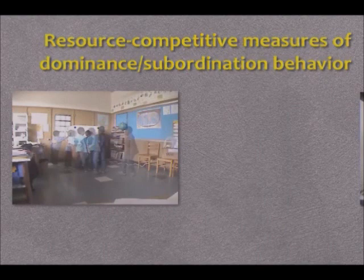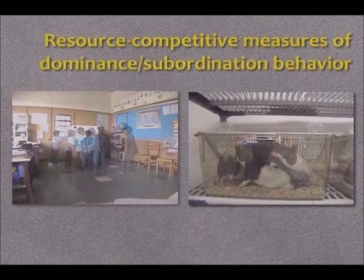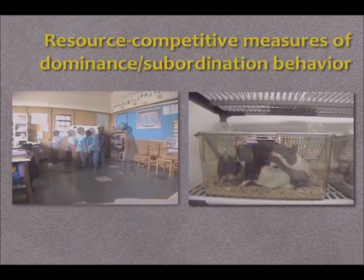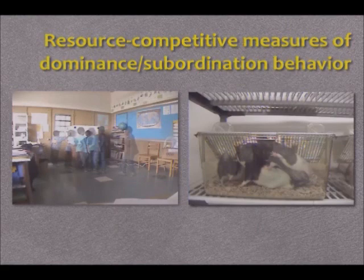My colleague at Berkeley, Darlene Francis, created a parallel experimental paradigm for her rat subjects. She melted chocolate into a candlestick holder, stuck it into the wall of the cage of same-sex quartets of rats, and was able with that procedure to mimic the kind of competition for a scarce resource that we used with the human children.